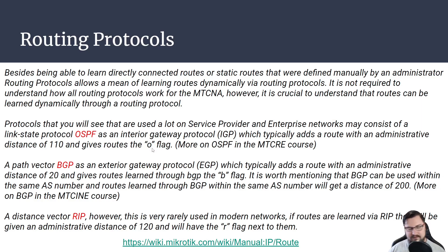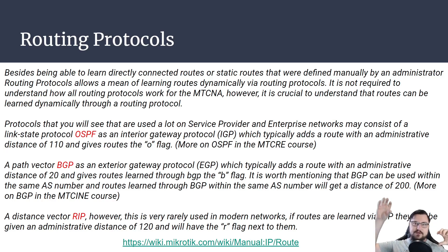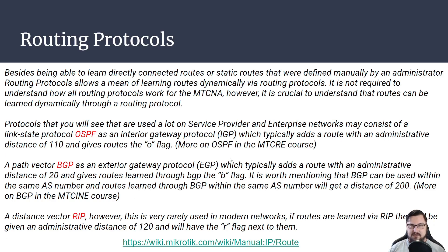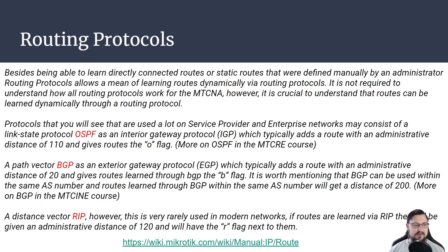Each routing protocol works differently. A static route is something we define as administrators. OSPF is dynamic routing that works within one area — inside your own network. You're not going to have your OSPF connect to another service provider's OSPF network exchanging routes, as that would be very messy. OSPF is an IGP, an Interior Gateway Protocol. BGP is an EGP, an Exterior Gateway Protocol — it's used for the internet itself and is actually responsible for the internet, the reason all routers know how to connect across the network to reach each other.